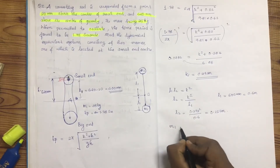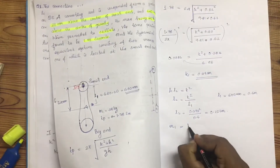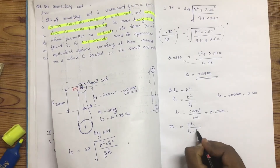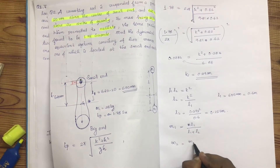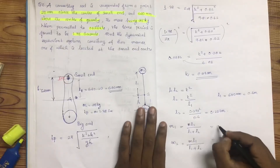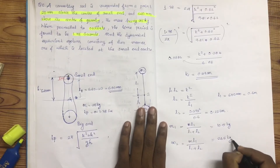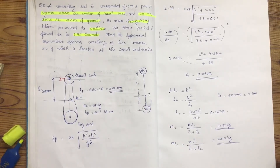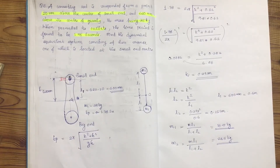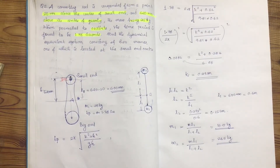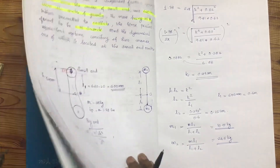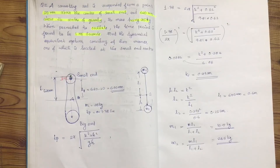M1 is equal to M times L2 divided by L1 plus L2. M2 is equal to M times L1 divided by L1 plus L2. The answers are M1 equals 10.5 kg and M2 equals 24.5 kg. Now we check the correct answers, which are confirmed.